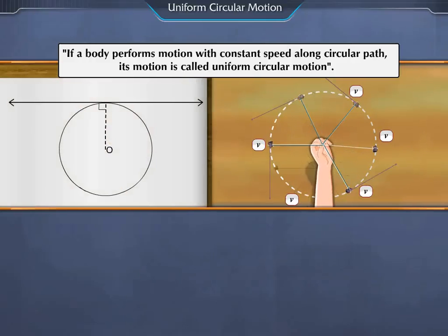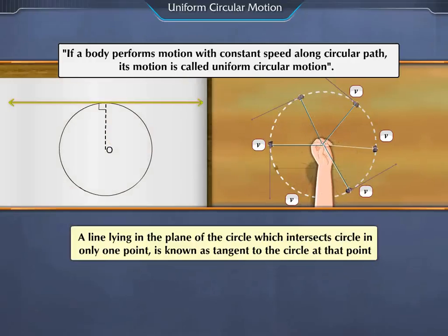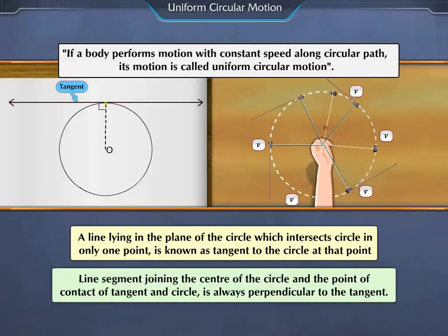Do you know what is tangent? Let us know this. A line lying in the plane of the circle which intersects the circle in only one point is known as tangent to the circle at that point. Line segment joining the center of the circle and the point of contact of tangent and circle is always perpendicular to the tangent.